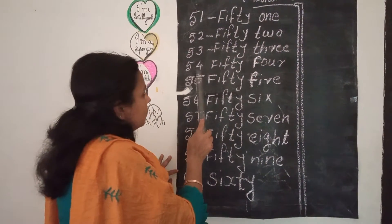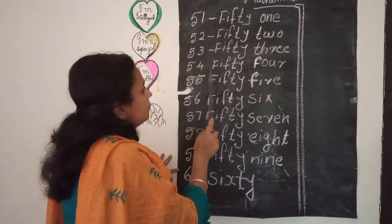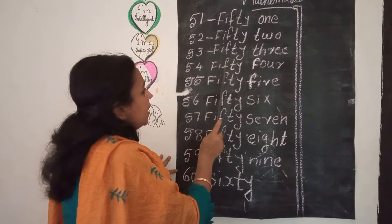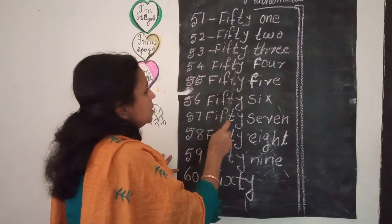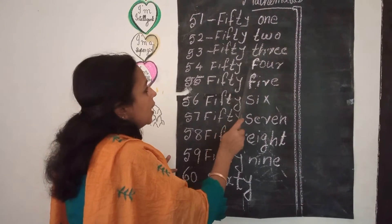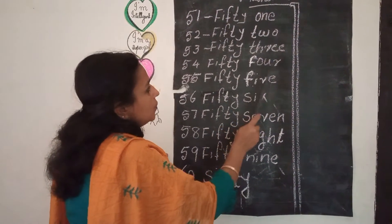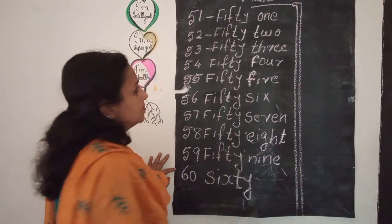54 — spelling: F, I, F, T, Y, F, O, U, R. Fifty-four.